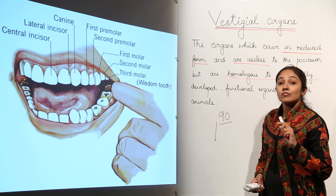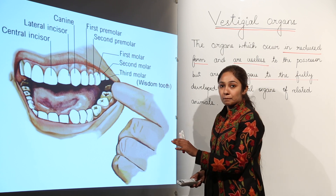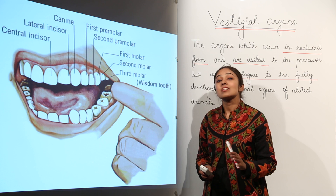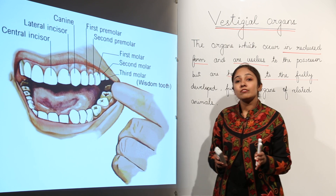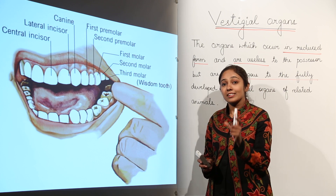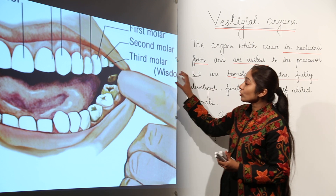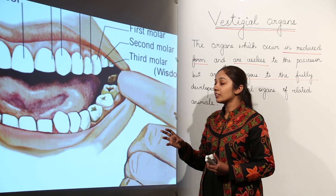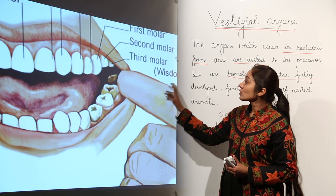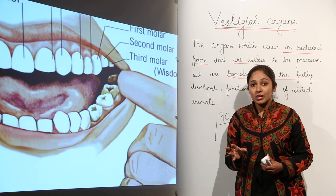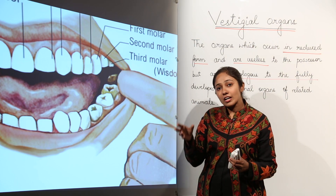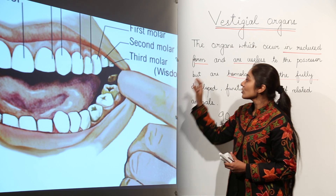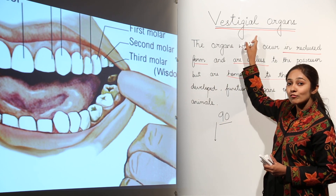Another example of a vestigial organ is the wisdom tooth. In 35% of individuals, this wisdom tooth never appears. In many individuals it comes out at a later stage and is known as the last molar. This wisdom tooth had some function in the past but is now useless. That is why 35% of individuals already have no wisdom tooth — making it an example of a vestigial organ.